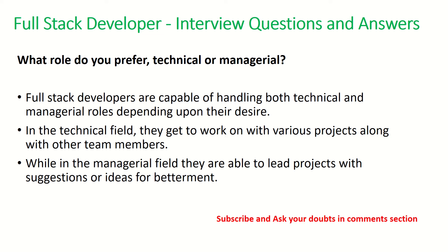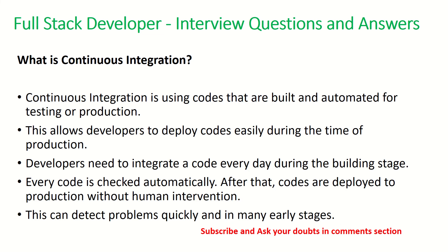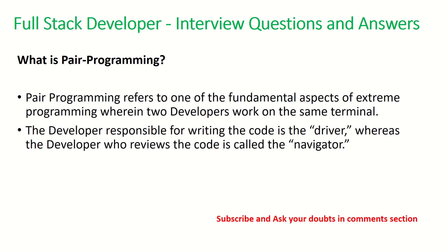The next question is: what is continuous integration? Continuous integration involves using code that is built and automated for testing or production. This allows developers to deploy code easily. Developers need to integrate code every day; during the build, every code is automatically checked and promoted to higher environments. Continuous integration helps detect problems early, possibly reducing the number of defects or bugs.